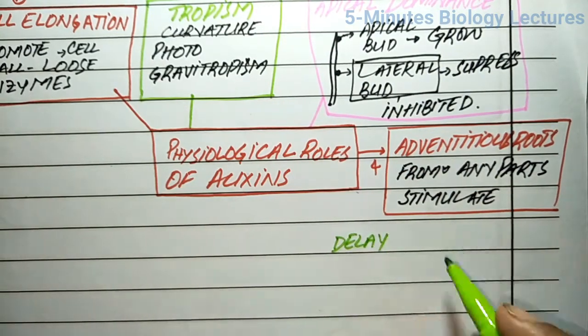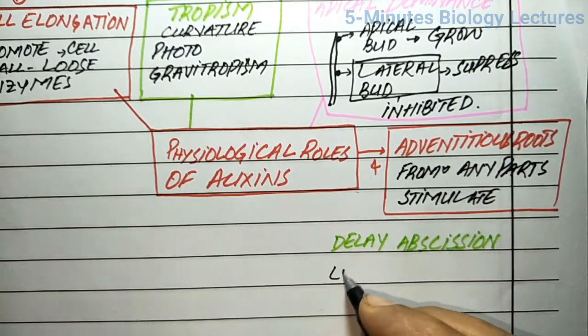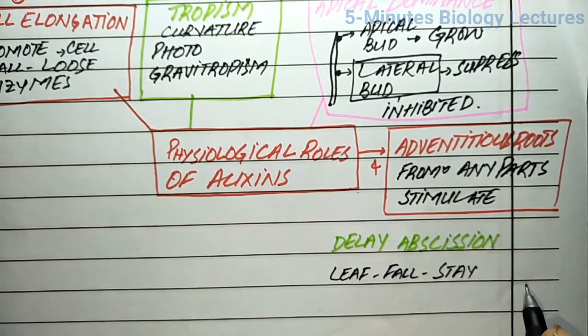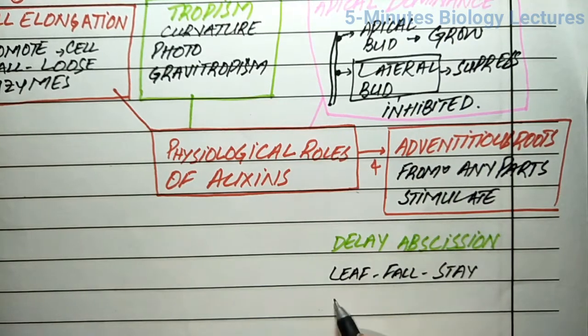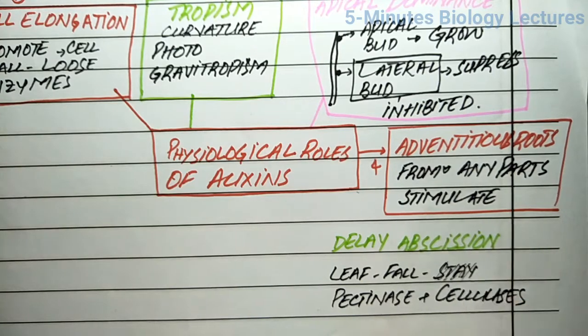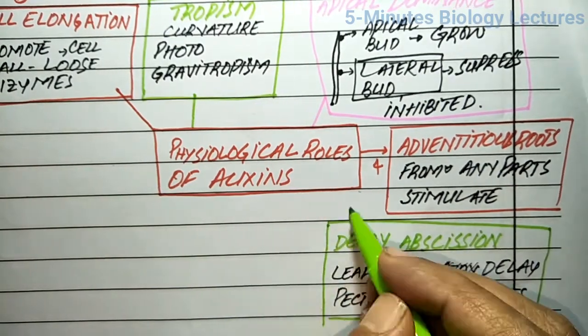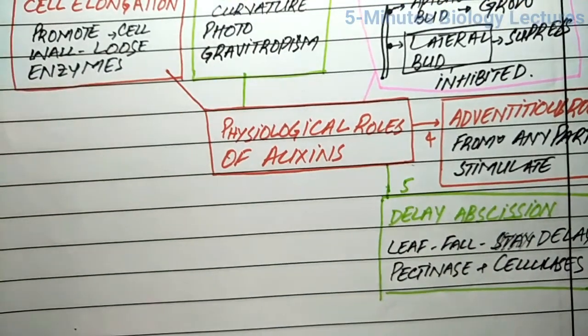Auxins delay the abscission of young leaves and fruits by inhibiting the action of cell-dissolving enzymes such as cellulase and pectinase. The abscission zone, or leaf fall zone, cuts off the nutrients and water supply to the leaf and fruit. However, auxins promote the abscission of mature or older leaves and fruits.